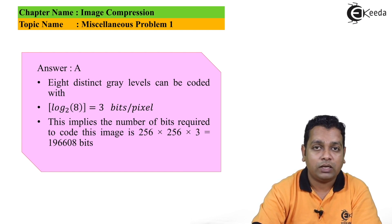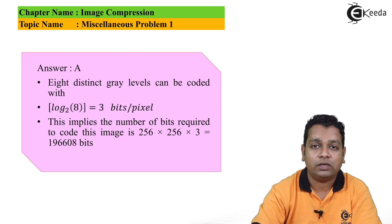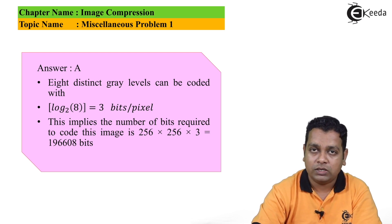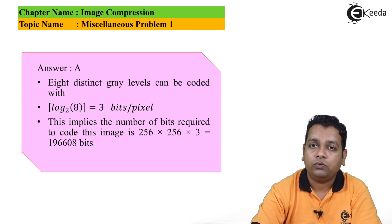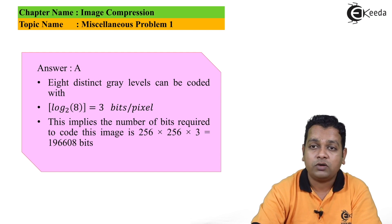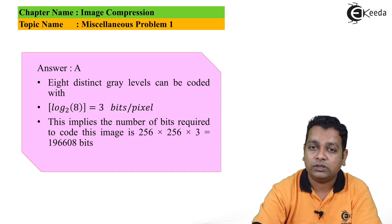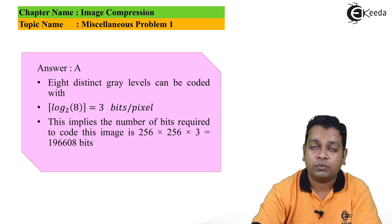Answering Part A: with 8 distinct gray levels, the number of bits per pixel is log base 2 of 8, which equals 3. So 3 bits per pixel are required. The total number of bits required to code this 256 by 256 image is 256 × 256 × 3 = 196,608 bits.